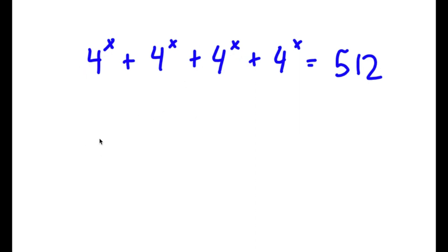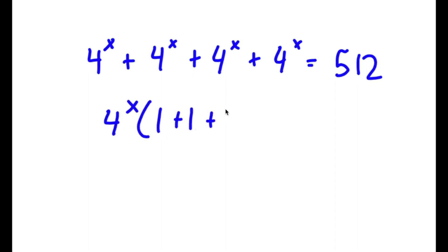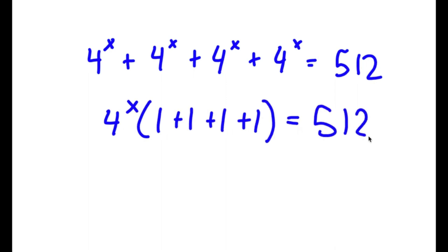To solve this problem, I'm going to first start by factoring out 4 to the power of x. So now I have 4 to the power of x times 1 plus 1 plus 1 plus 1 is equal to 512.